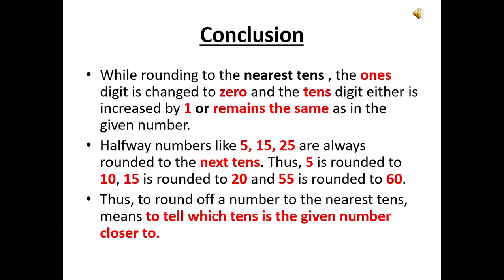From this we conclude: while rounding to the nearest tens, the ones digit is changed to zero and the tens digit is either increased by one or remains the same as in the given number. Also, halfway numbers like 5, 15, 25 are always rounded to the next tens - thus 5 is rounded to 10, 15 is rounded to 20, and 55 is rounded to 60. So to round off a number to the nearest tens means to tell which tens the given number is closer to.